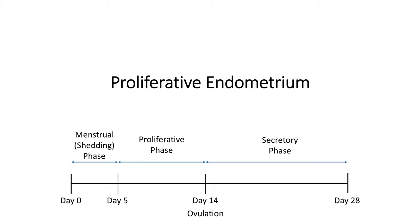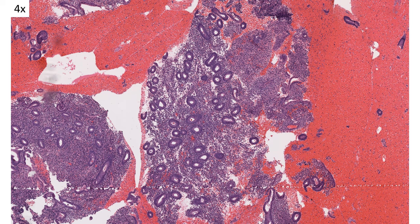Let's talk about the proliferative endometrium — the endometrium seen between days 5 and 14 of the cycle. At low power, the specimen looks very blue. The stroma is quite cellular and the glands themselves are cellular, but there's a decent, even spacing between the glands. There are no areas that look really crowded with glands, which is important because we're often evaluating for pathologies such as hyperplasia. The contour of the glands looks very round from low power, which is an important feature to compare against other phases.